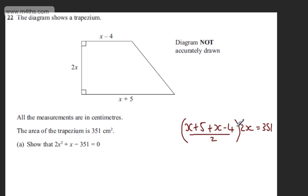If we collect like terms and simplify, we've got x plus x, which gives 2x, and then plus 1. So this will be 2x + 1. The 2 and the 2 cancel, which gives just x, and that equals 351.